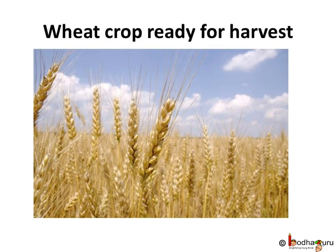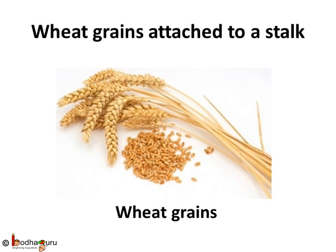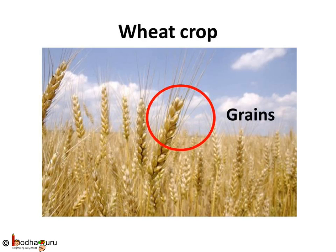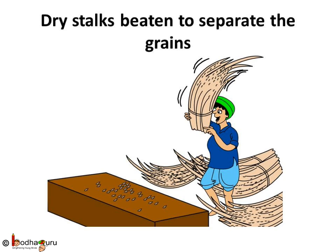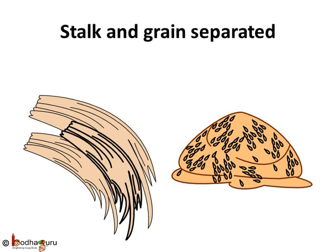When the crop is ready, the stalk as well as the wheat kernels become hard and brown, and the farmer reaps the harvest — that is, the crop is cut. The wheat grains are still attached to the stalk, so the grain has to be separated from the stalk. The stalks of wheat are beaten on the hard ground to separate the grains from them.